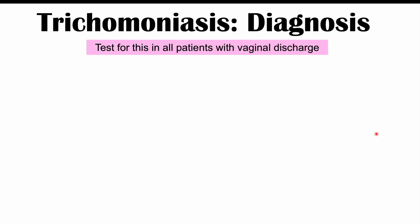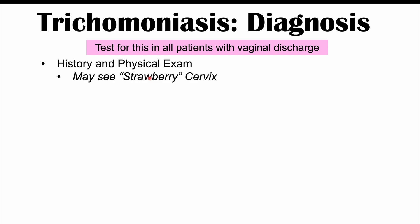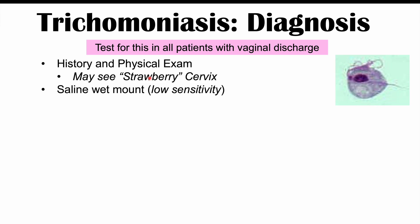It's important to test for trichomoniasis in all patients with vaginal discharge, starting with a history and physical examination. On cervical examination, you may see a strawberry cervix, occurring in roughly 40% of patients. The older method of diagnosis is the saline wet mount — still performed and cheaper, though with lower sensitivity — where vaginal discharge is examined under a microscope to visualize the Trichomonas vaginalis organisms.